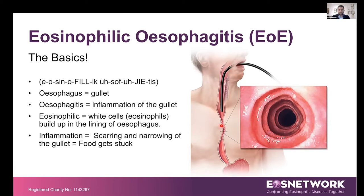So the esophagus — that's the gullet — then the mouth, gullet, esophagus, and then you have the stomach. Esophagitis means inflammation in the gullet, where inflammatory cells tend to accumulate in an organ. Eosinophilic means the buildup of white cells — a type of white blood cell — that tend to build up in the lining of the esophagus. When that buildup occurs, it leads to inflammation, which often leads to scarring and narrowing of the gullet, and then food gets stuck.